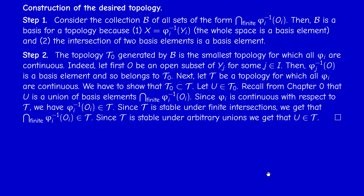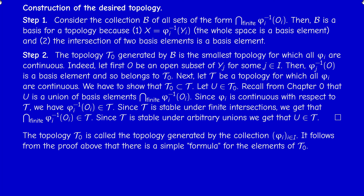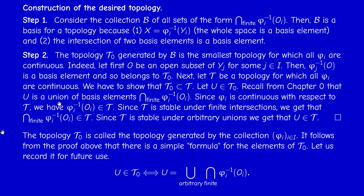It's called the topology generated by phi_i. There is a simple formula for the elements of T0: an element U belongs to T0 if and only if it can be written as an arbitrary union of finite intersections of sets of the form phi_i⁻¹(O_i). We can write it more formally as a union over lambda of intersections over i in J_lambda — where J_lambda is finite — of phi_i⁻¹(O_i).